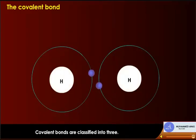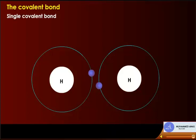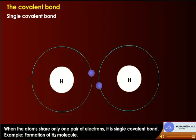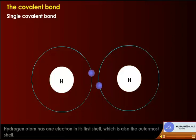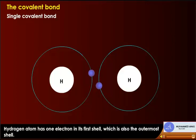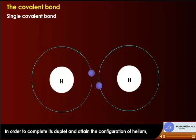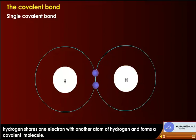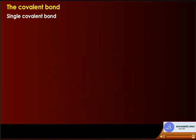Covalent bonds are classified into three types. Single covalent bond: when atoms share only one pair of electrons, it is a single covalent bond. For example, in the formation of a hydrogen molecule, hydrogen has one electron in its first shell. To complete its duplet and attain the configuration of helium, hydrogen shares one electron with another hydrogen atom. One pair of shared electrons is shown by a single line.